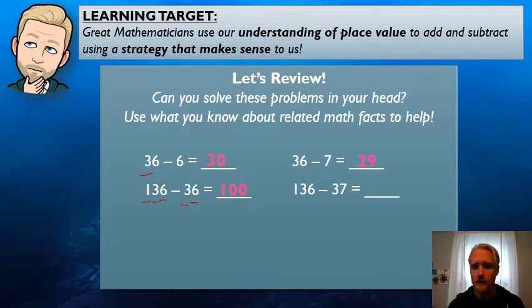So that's leaving us with 0 in the tens place and 0 in the ones place. All right. Let's do one more. 136, excuse me, minus 37. All right. So it's one more than before. So what's it going to be? Kiss your brains, guys. Exactly. 99. Because 37 is one more than 36. So that means we have to go past 100 to 99.